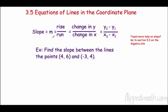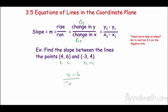Slope is denoted with an m. It's also called rise over run, or the change in y over the change in x. Sometimes we denote that with the triangle symbol: delta y over delta x, or y2 minus y1 over x2 minus x1. Let's find the slope: this is (x1, y1) and (x2, y2). So 4 minus 6 over negative 3 minus 4 — that's negative 2 over negative 7 — so our slope is 2 over 7.